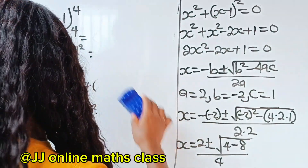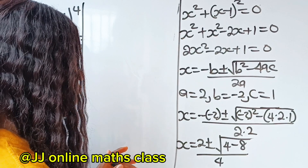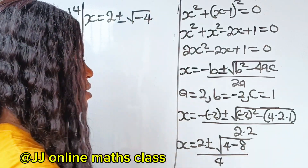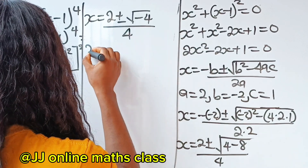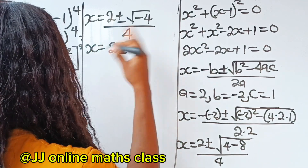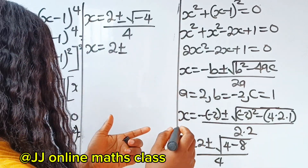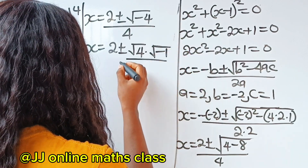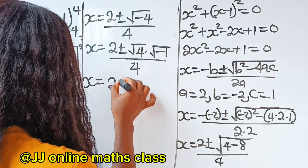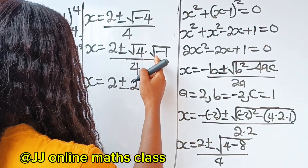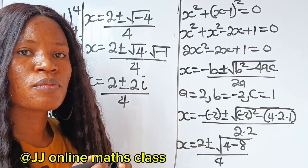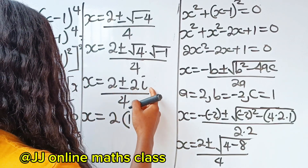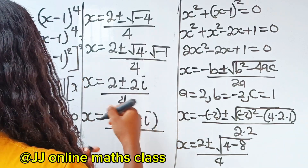The first value of x is 1 over 2. Now, square root of minus 4 equals square root of 4 times square root of minus 1, which is 2i. So x equals 2 plus or minus 2i, divided by 4. Factoring 2 from the numerator: 2 times 1 plus or minus i, divided by 4, simplifies to 1 plus or minus i, divided by 2.